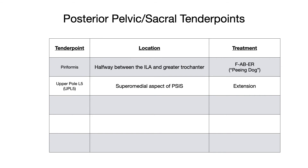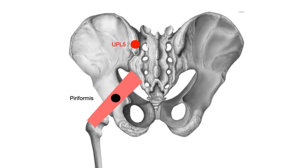The next tender point is upper pole L5, also known as UPL5. Although I mentioned in the lumbar counterstrain section that there weren't posterior lumbar tender points to know, these posterior pelvic and sacral tender points have lumbar numbers in them but are categorized as pelvic and sacral for COMLEX and in-class exams. Upper pole L5 is located on the superior medial aspect of the PSIS. The treatment position is pure extension, and UPL5 is depicted in red on the diagram.